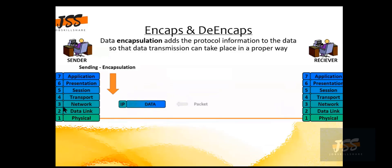At the network layer, it is now called a packet. The data is still there, and a new IP header — which corresponds to the network layer — is added. As you can see, the TCP header has been grayed out because TCP is relevant to the transport layer, not the network layer.